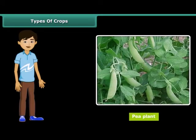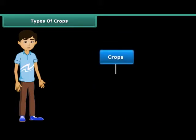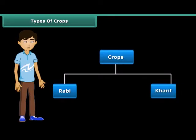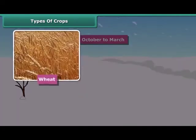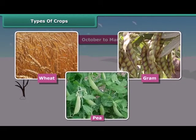If you wish to grow a pea plant in the hot season, you can't do it. Do you know the reason behind it? In India, crops are broadly classified into two categories on the basis of the season they are grown in — Rabi crops and Kharif crops. Rabi crops are usually grown in the winter season from October to March. Wheat, gram, and peas are examples of Rabi crops.